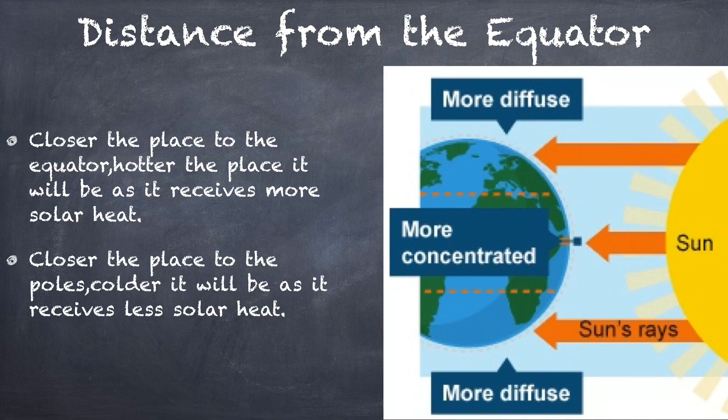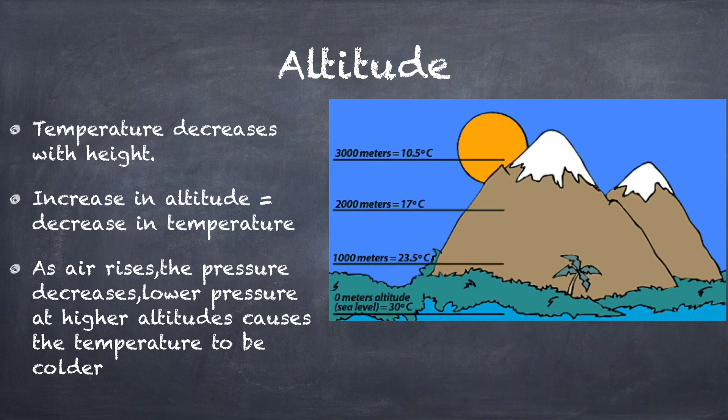Temperature decreases with height — the higher you go, the cooler it becomes. The peaks of high mountains are covered with snow throughout the year. Thus, the higher a place is from sea level, the cooler its climate. This is because as air rises, the pressure decreases.